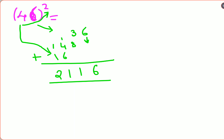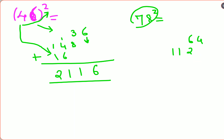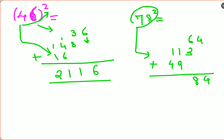Let's try 78 squared. First write 8 squared which is 64. Then 7 times 8 times 2 equals 112. Then write 7 squared which is 49, skipping one digit position. Add them all up: you get 4, 8, then 10 carry 1, giving 6084.